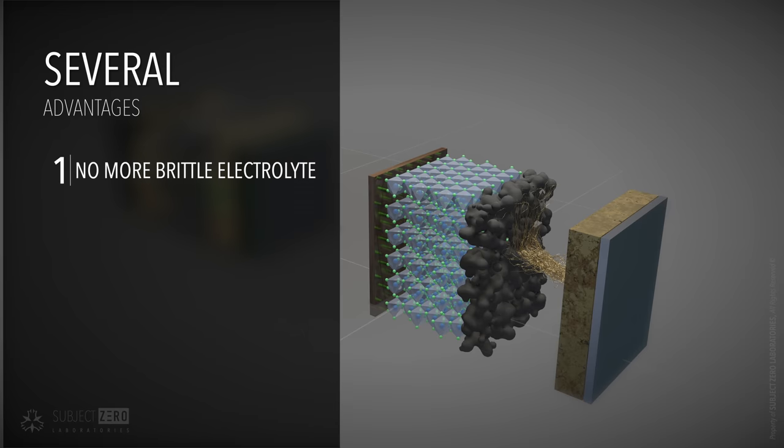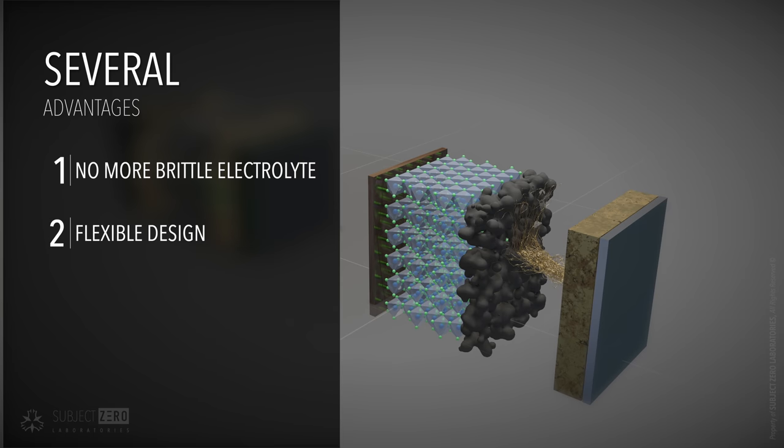What this means in practice is that solid-state batteries usually require a thick, brittle electrolyte layer, giving up flexibility as a result.